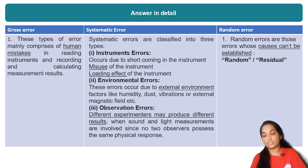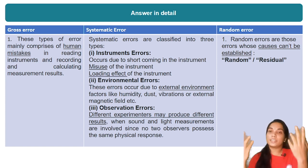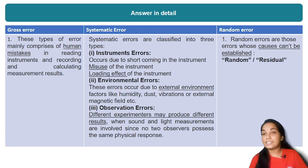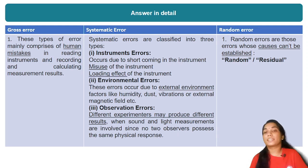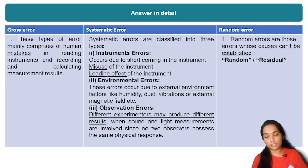Environmental errors are errors due to external environment affecting the observer and the instrument. The external factors include humidity, dust, vibration, and external magnetic field. The external magnetic field is an important influence factor.